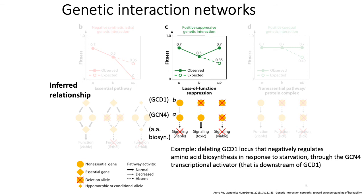Another example is a positive suppressive genetic interaction. A genetic suppression event is a positive genetic interaction that occurs when a mutant in one gene leads to some severe loss in phenotype — say, mutation of gene B leads to a fitness of 0.5. But if you mutate a second gene, that second mutation suppresses the effect of the first and actually raises the fitness level. So suppression of gene A in addition to B leads to a slight increase in fitness compared to what you'd expect from the individual mutations.